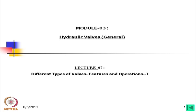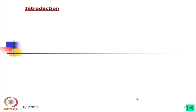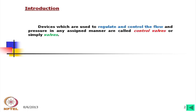Welcome to lecture 7 on different types of valves, features and operations part 1. This is under module 3 hydraulic valves and these valves are of general category. Devices which are used to regulate and control the flow and pressure in any assigned manner are called control valves, or simply valves. We should call them control valves, but normally we omit the control part and call them simply valves.